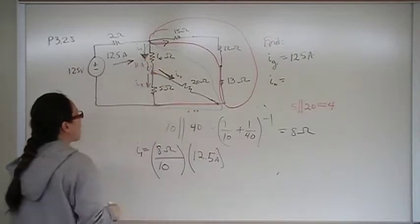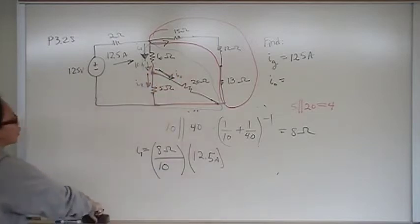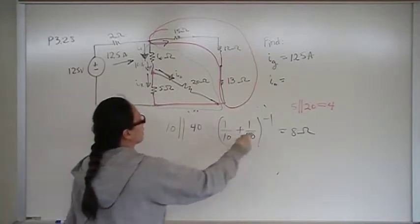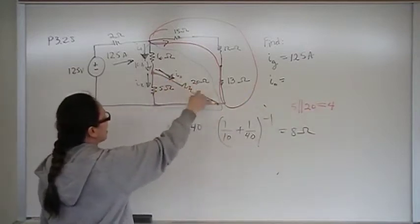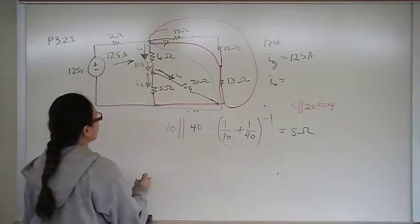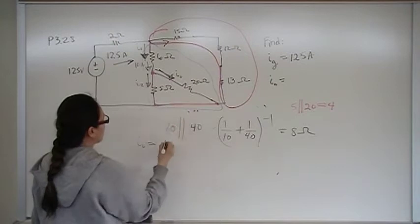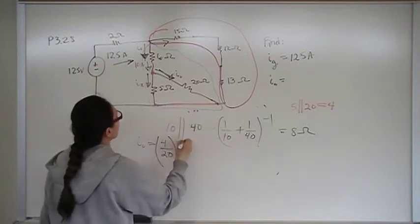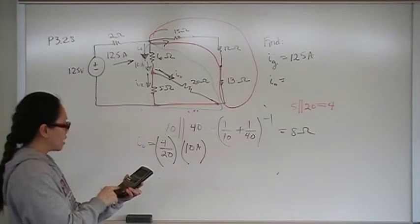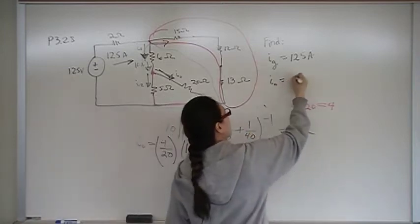So now I know 10 amps is going into here. This is going to split into I2 and I0. So now we reapply current division to figure that out. We know earlier that we calculated the equivalent resistance of this on-ramp for that break-off point to be 4. So we know that I0 is going to be 4 divided by the branch that we're looking at, in this case is 20, times the current that's going in, which is 10 amps. So we're going to go 10 times 4 divided by 20, and that gives me 2 amps, which is the answer.